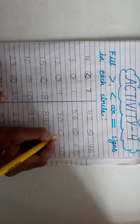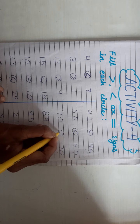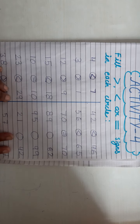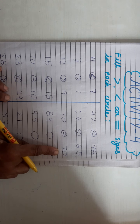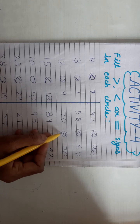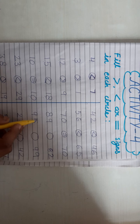दोनों सेम नंबर है, हम यहाँ equal लगा देंगे। किसी को नहीं खाएंगे, अब कंफ्यूज मत होना — दोनों सेम हैं, तो equal sign लगाएंगे। (Both numbers are the same, so we put the equal sign here. Don't be confused — both are equal.)